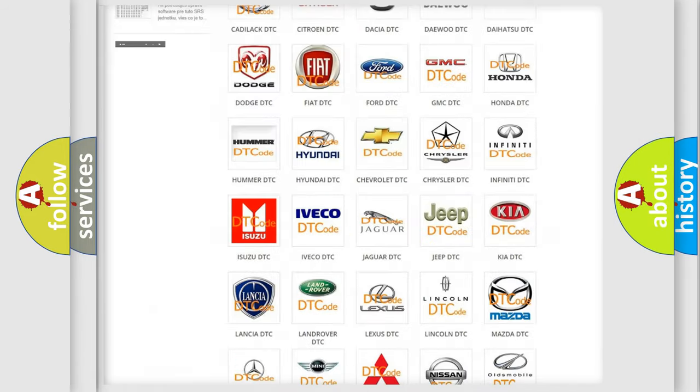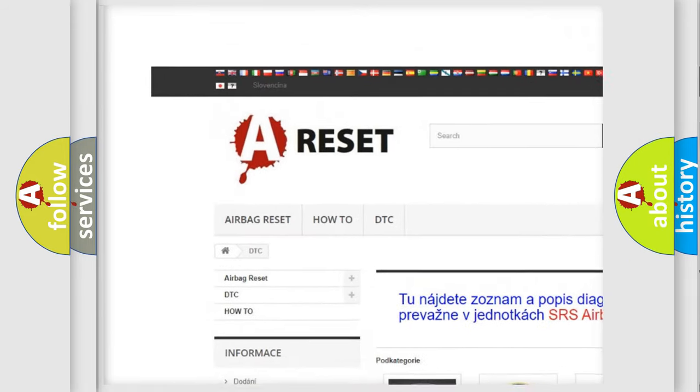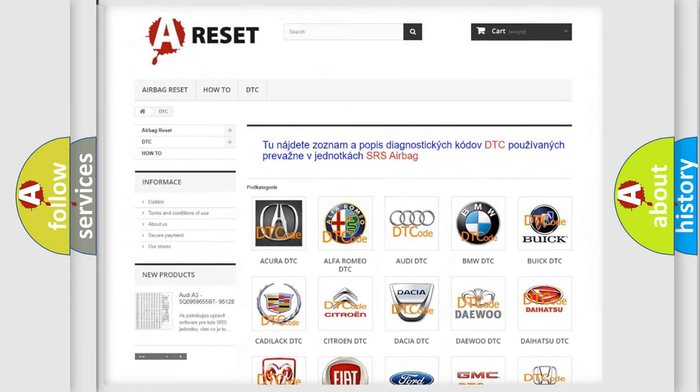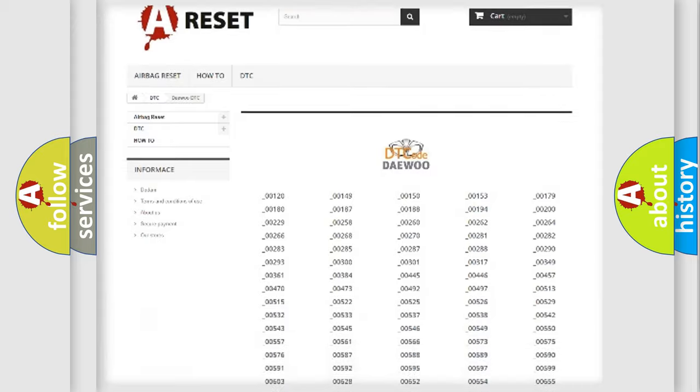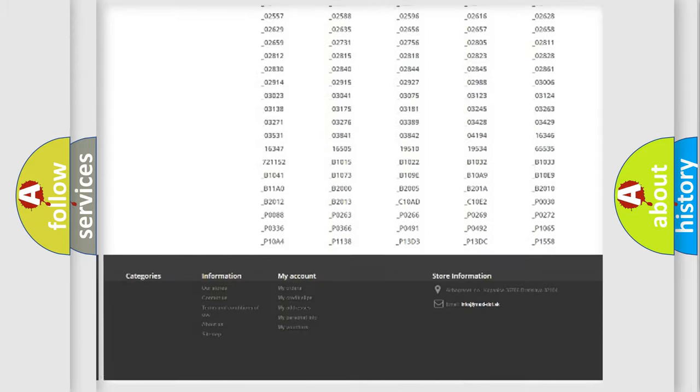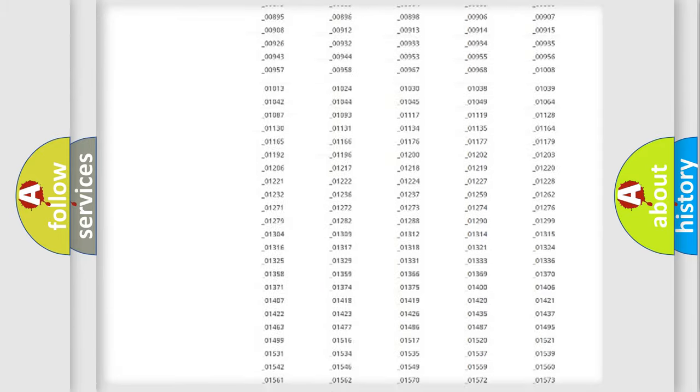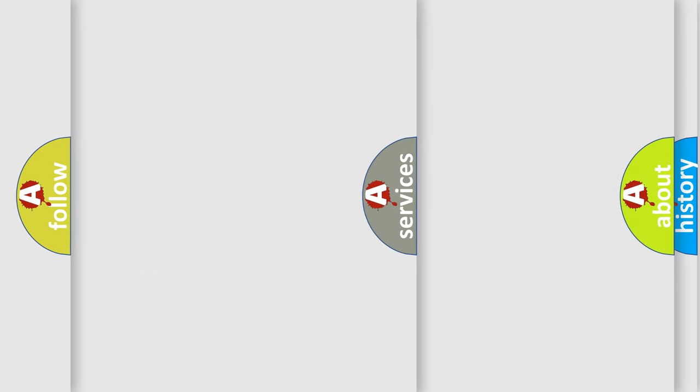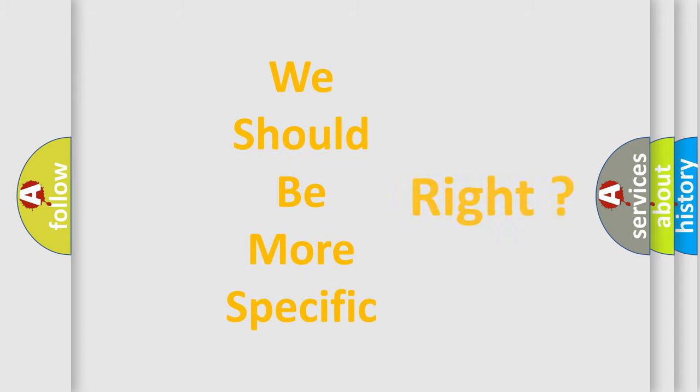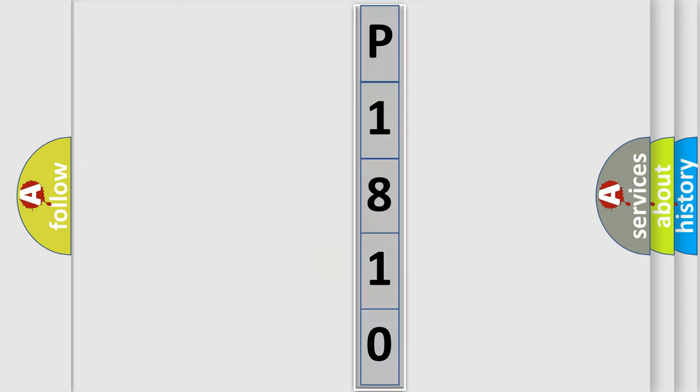Our website airbagreset.sk produces useful videos for you. You do not have to go through the OBD2 protocol anymore to know how to troubleshoot any car breakdown. You will find all the diagnostic codes that can be diagnosed in EU vehicles, and many other useful things. The following demonstration will help you look into the world of software for car control units.